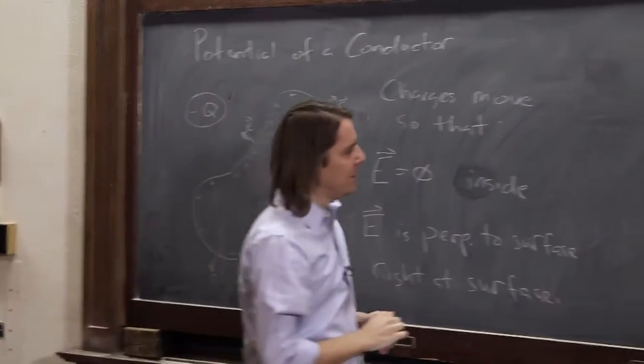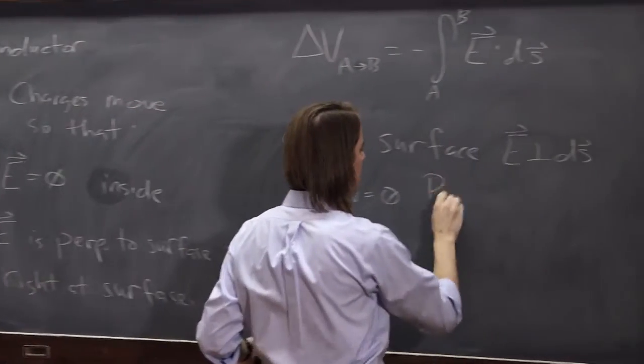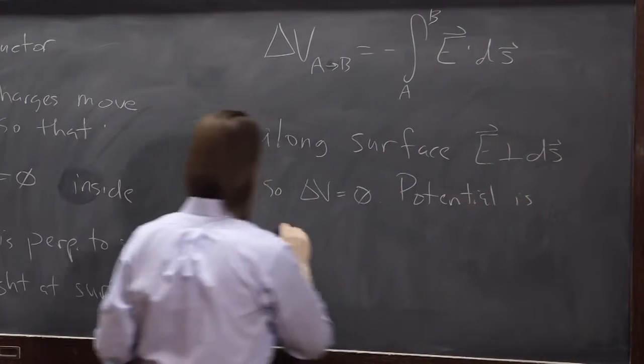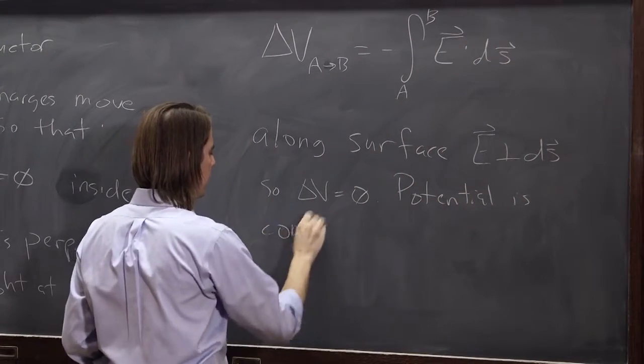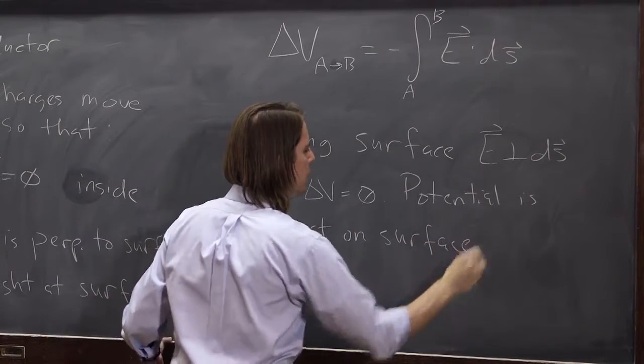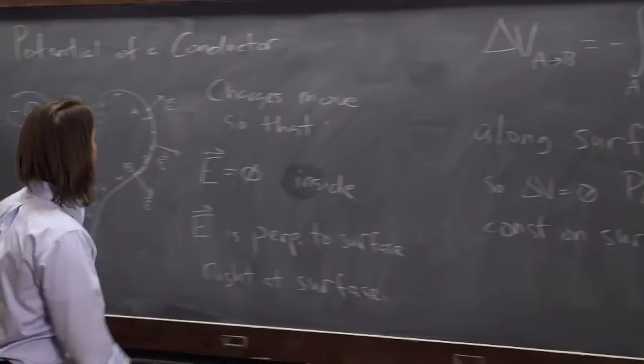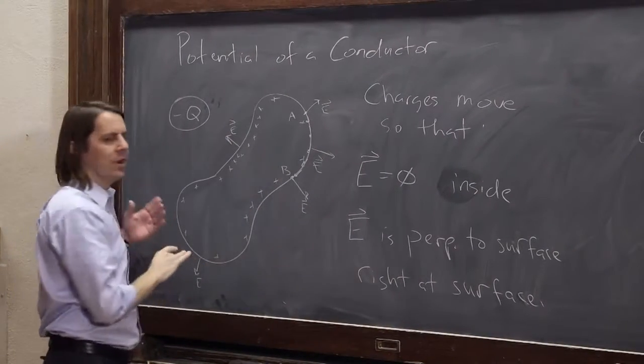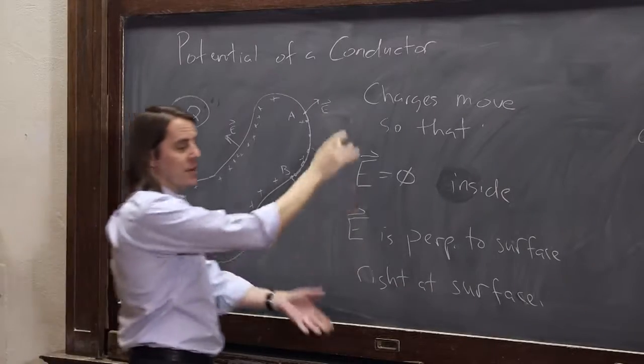So what that means is that the potential is constant on the surface of a metal. If one part of the metal or the conductor is at nine volts, the whole thing's at nine volts, if you're in electrostatic equilibrium.